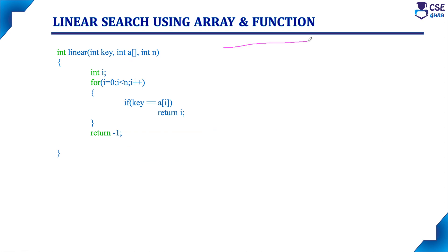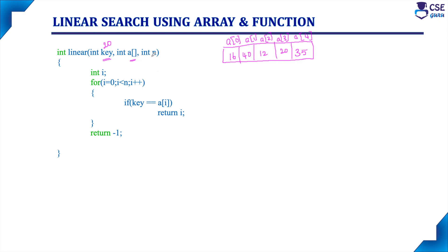What is the array we have entered? a[0], a[1], a[2], a[3], and a[4]. The elements entered are 16, 40, 12, 20, and 35. From the function call, it will send three parameters: the key element is 20, 'a' is the complete array, and n is 5. All three parameters have been sent from the calling function. With the help of these values, it will execute.